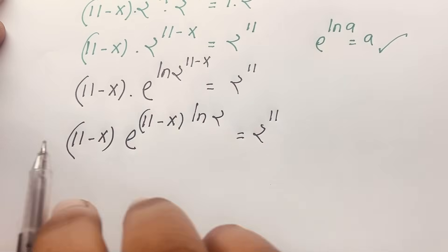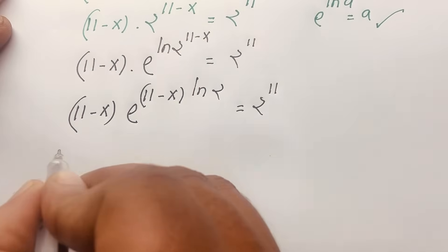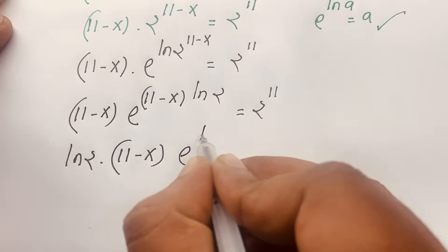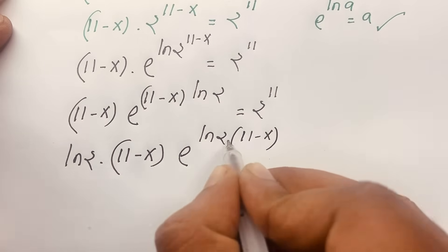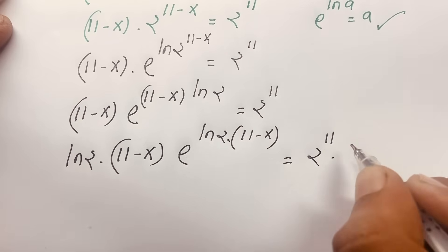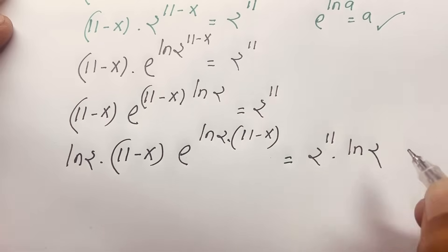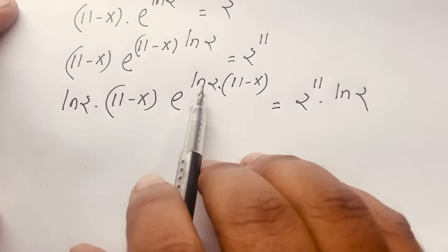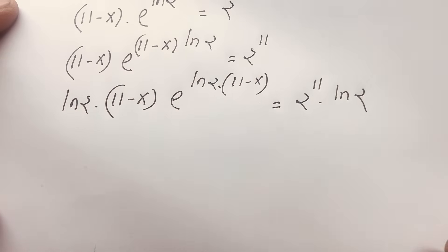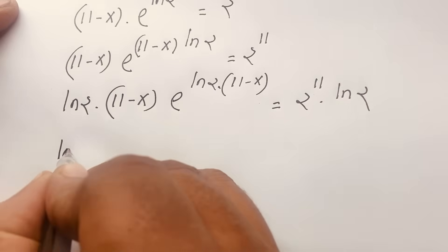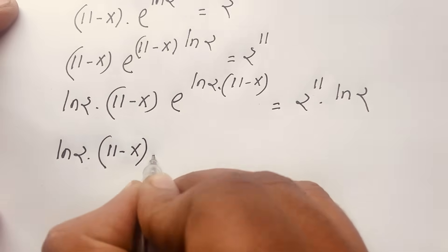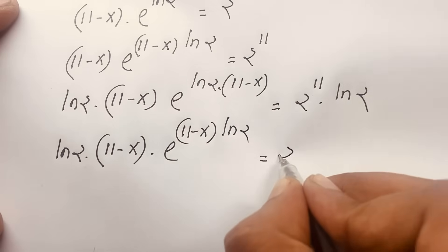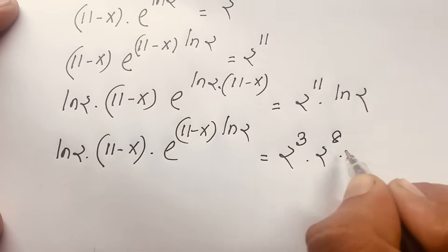Multiplying both sides by ln 2, we get ln 2 times (11 minus x) times e to the power (11 minus x) times ln 2, equal to 2 to the power 11 times ln 2. We split 2 to the power 11 as 2 to the power 3 times 2 to the power 8, since 3 plus 8 equals 11, giving the right side as 2 to the power 3 times 2 to the power 8 times ln 2.